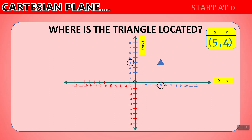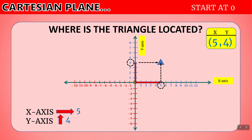We can also, using a different method, start at zero and count the number of spaces on the x-axis first, then count the number of spaces on the y-axis to also give the location of our point. If we start at zero and go all the way over, we can see that stops at five, which is right underneath the triangle — we've gone over five spaces. And if we start back at zero and count up the y-axis, it also stops at four, which is right across from where the triangle is — we've gone up four spaces. So our point is located at five comma four.